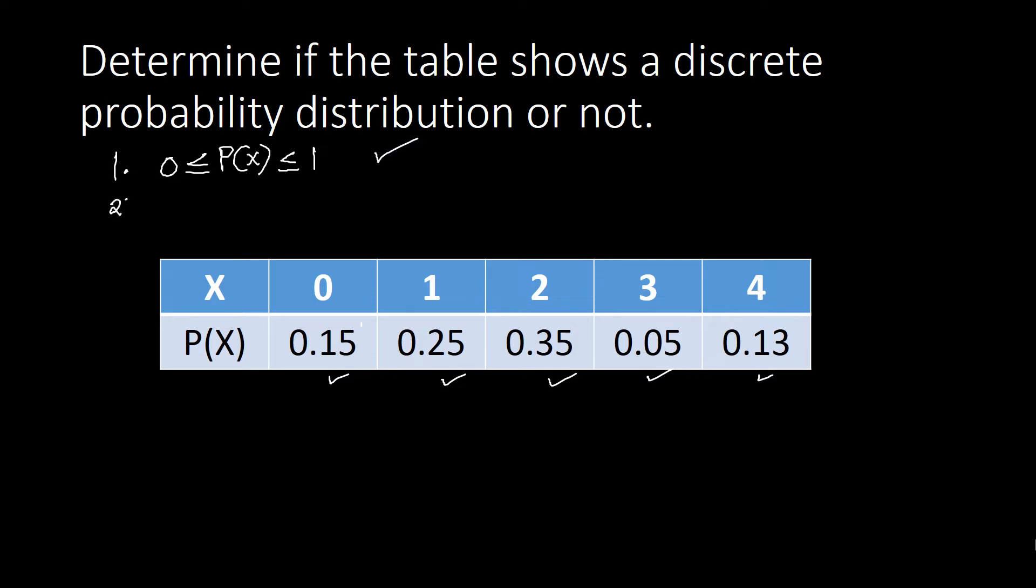Our second condition here says that the summation of your P(X), so the sum here of your P(X), will be always equal to one. So this is now summation of your P(X) sub i where i here is equal to one until n.